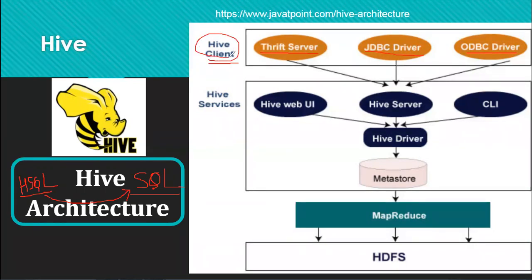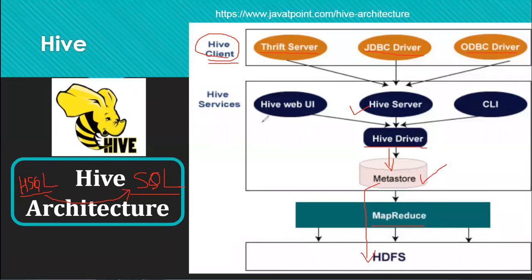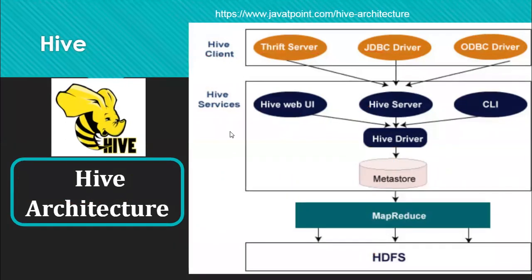Whatever command is given by the client is first read by the Hive server, then through the Hive driver it is checked in the metastore — verifying whether the table name in the query exists. If it is available, the query is passed to HDFS through MapReduce and the output is returned to the Hive client. You can create a GUI using the Hive Web UI designer, or use the CLI command line interface to run queries.